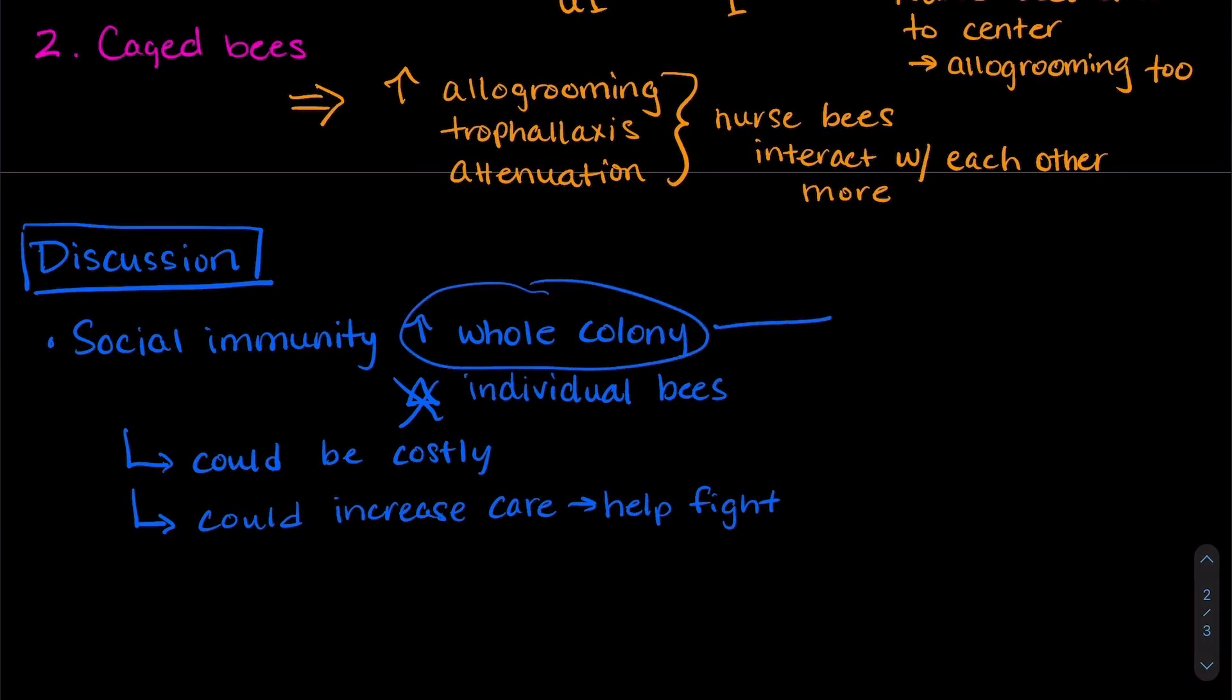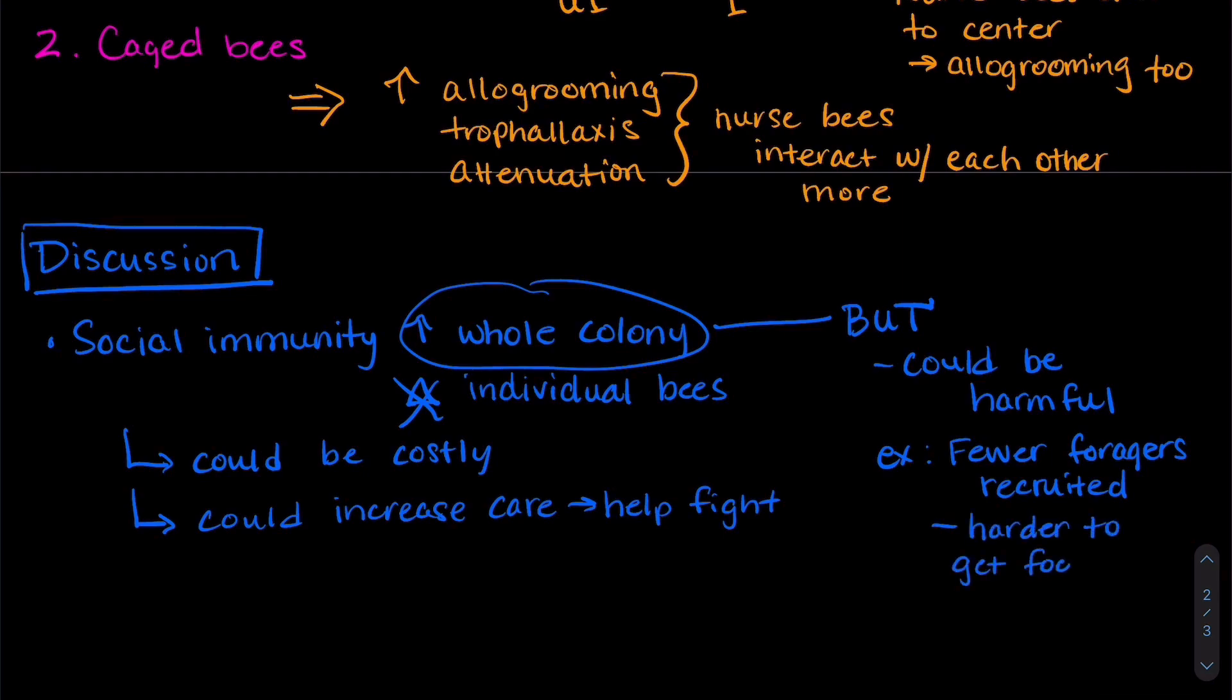The researchers think that social distancing in the colony might be limited because it's harmful overall. For example, when foragers shift their dances to the outer edge of the colony, they might not recruit as many other foragers to collect food, which makes it harder to feed the colony.